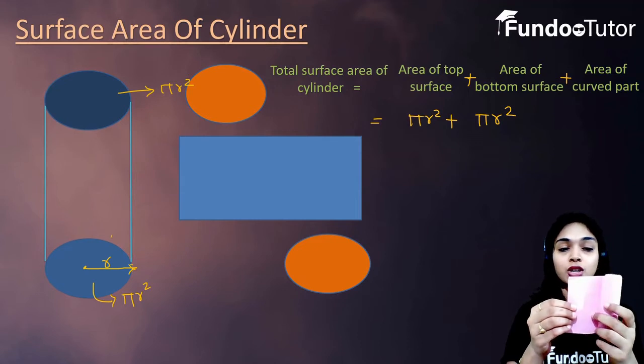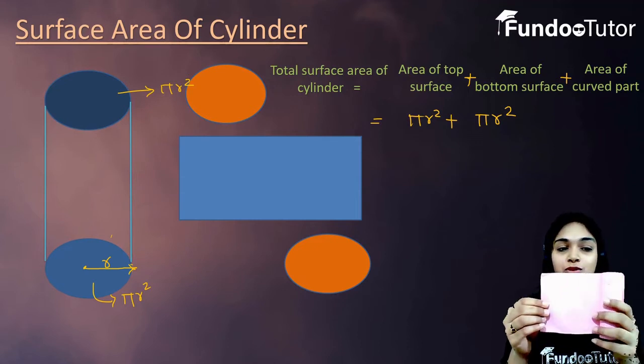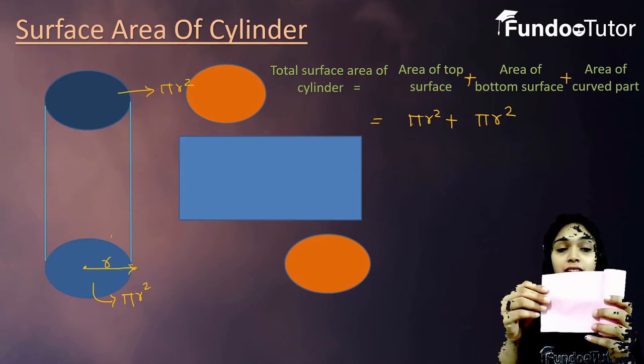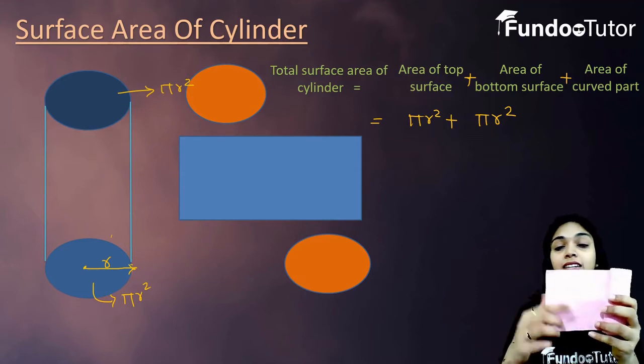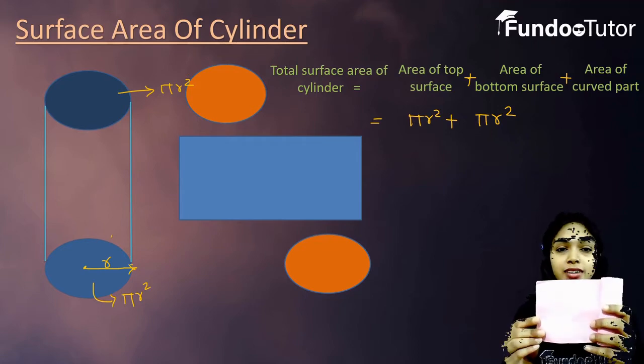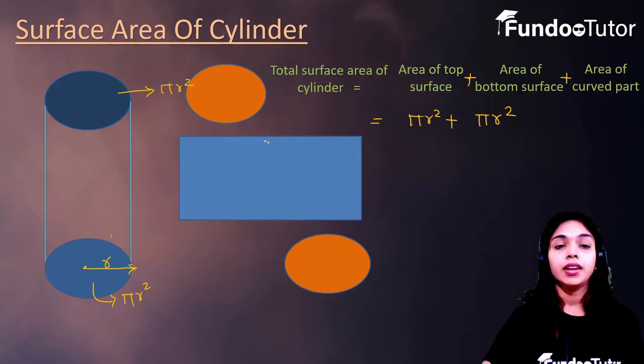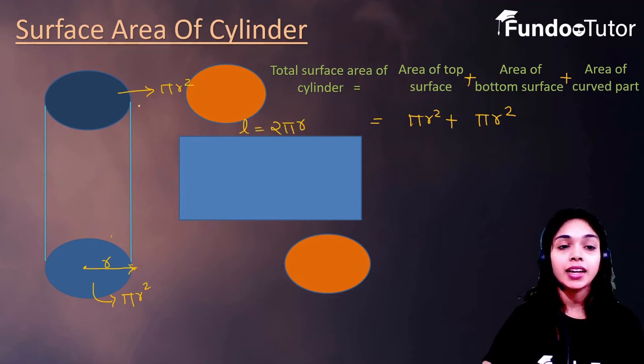So, we can say that the length of this rectangle is 2 pi r. And if the height of cylinder is h, then what can we say? That the length of this rectangle is h.